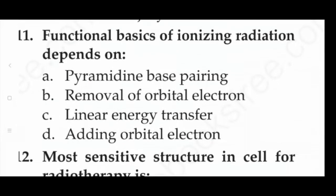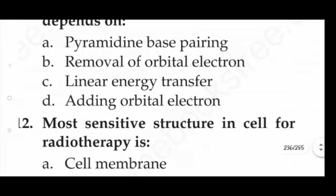Next question: the functional basis of ionizing radiation depends on — option A: pyrimidine base pairing, option B: removal of orbital electron, option C: linear energy transfer, option D: adding orbital electron. The answer is option B — removal of orbital electron.